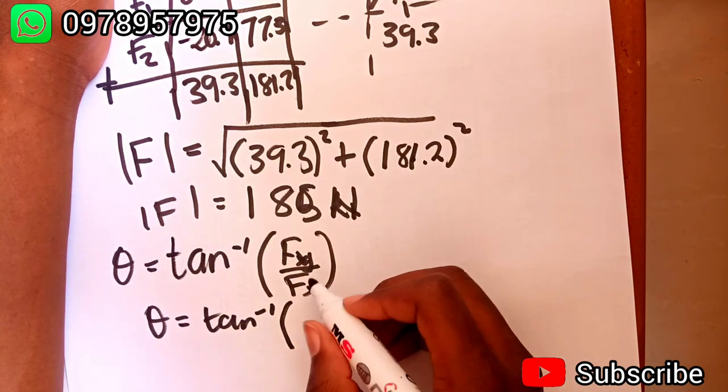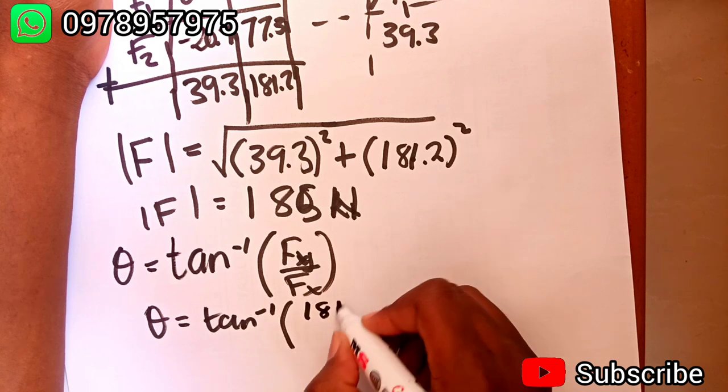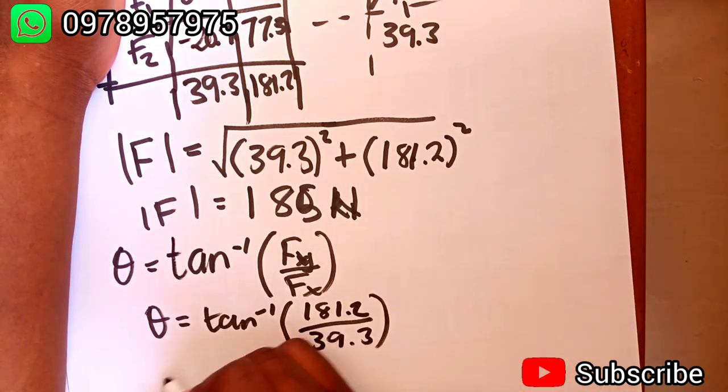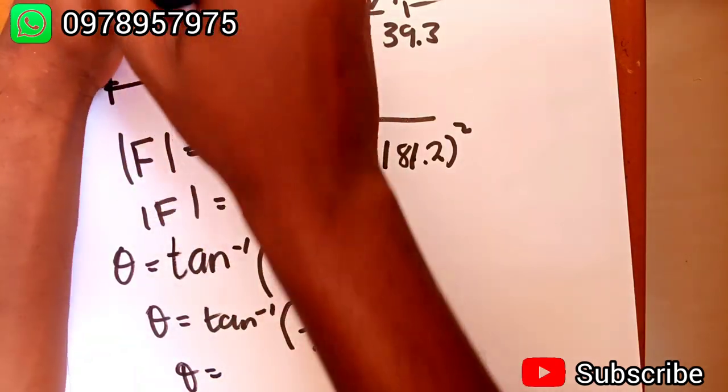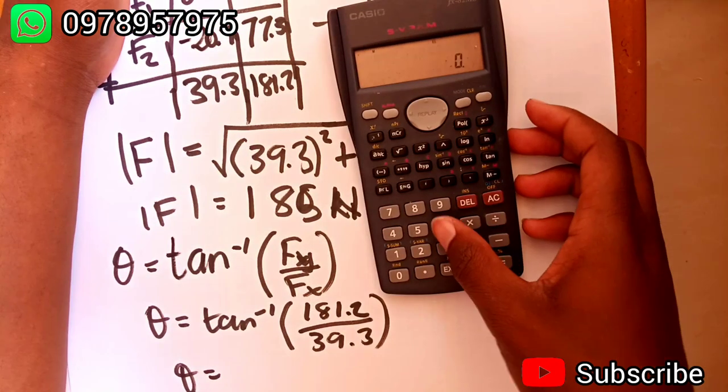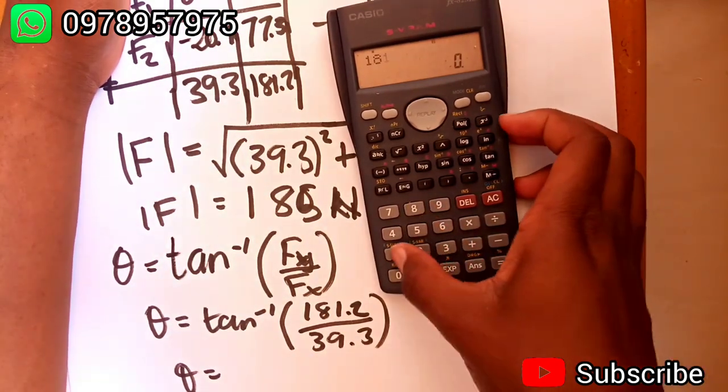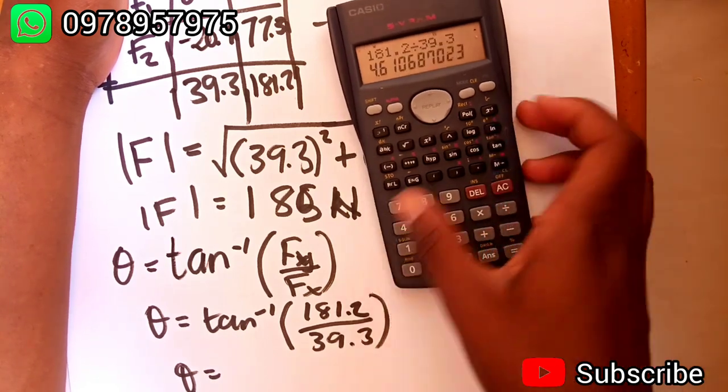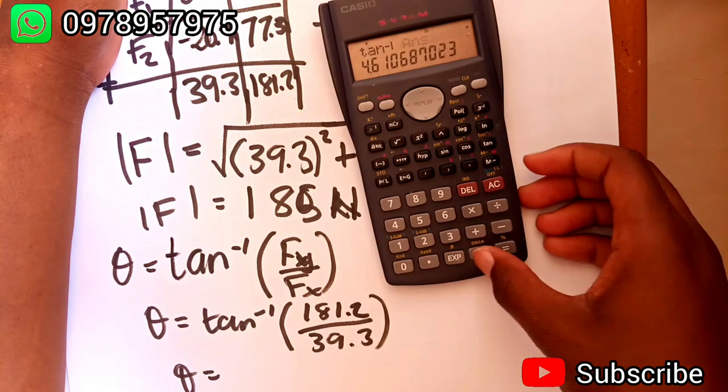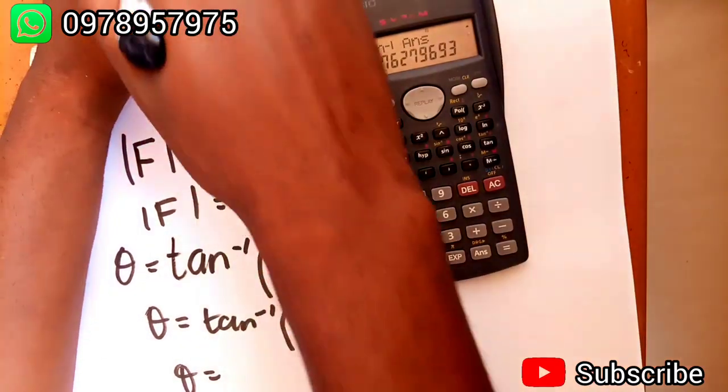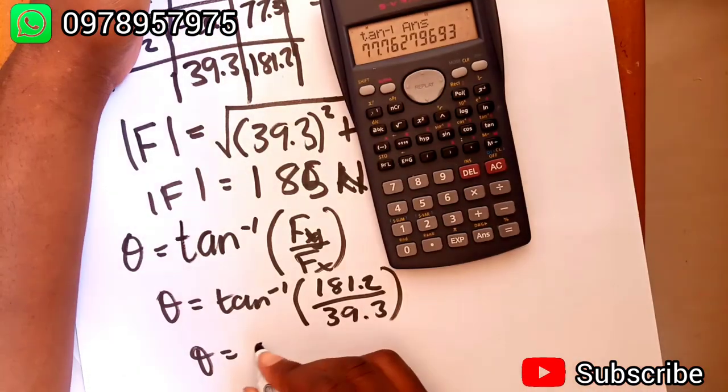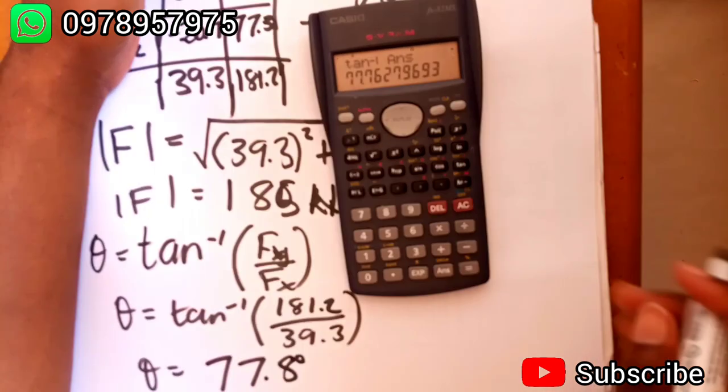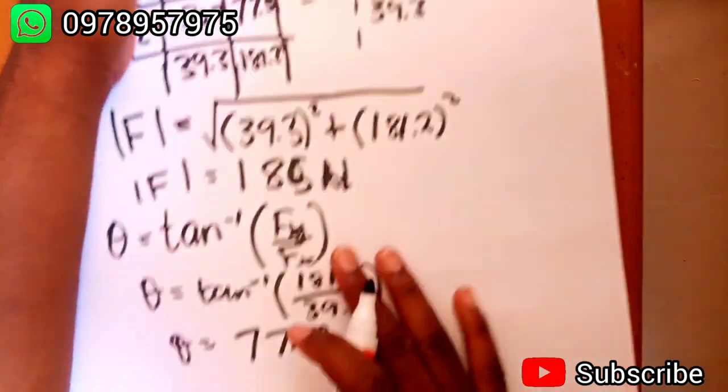Theta will be given by tan inverse of the force in the y over the force in the x. Theta is going to be tan inverse of 181.2 over 39.3. Theta is going to be equal to 77.8 degrees.